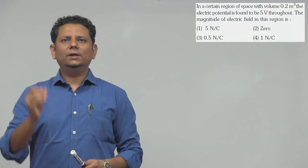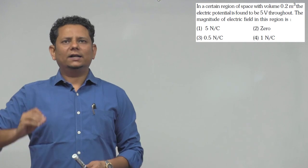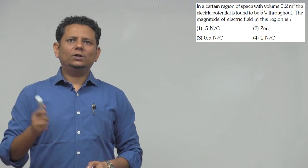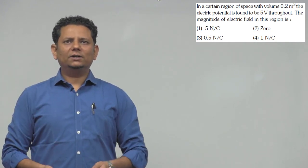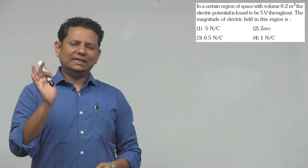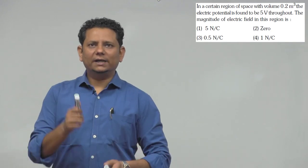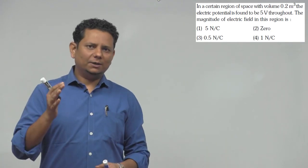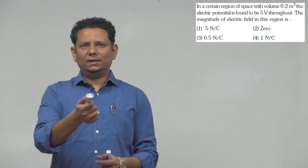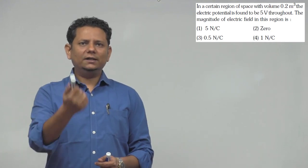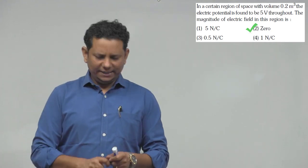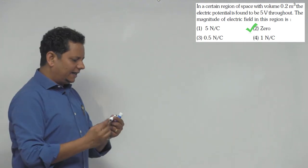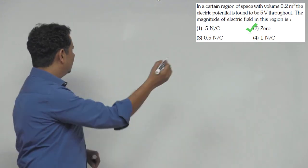The next question states: in a certain region of space with volume 0.2 meter cube, the electric potential is found to be 5 volt throughout. The magnitude of electric field in the region is zero, because the electric potential is constant. Constant electric potential means electric field is zero.